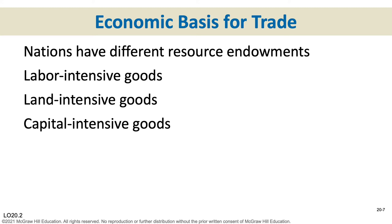We're going to develop the concept of comparative advantage, which is used to explain the relationship between specialization and international trade. When we calculate comparative advantage, we look to see which country can produce a good at the lowest opportunity cost. We look at just two goods in each of two countries, and ask: if we make good A, how much of B would we have to give up? The country that gives up the least amount of B has a comparative advantage for producing A.